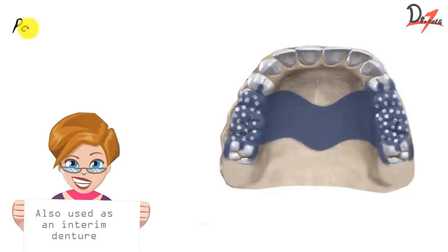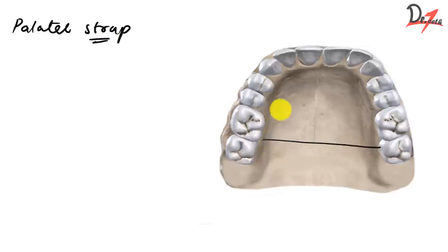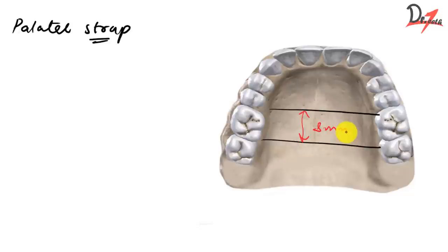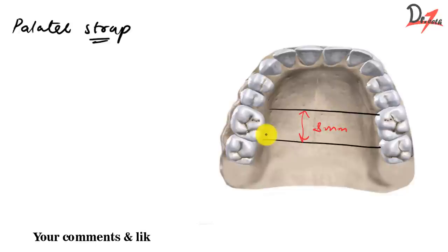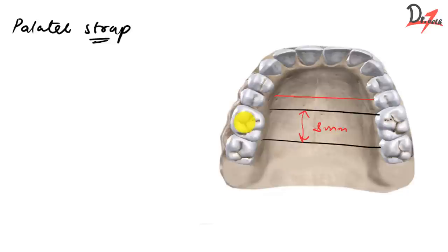The next type is the palatal strap. Instead of a bar, we have a broad strap — minimum 8 mm wide. The palatal strap is not bulky because it covers more palatal area, getting support from there, and the increased surface area provides rigidity, so it can be kept thin. As the number of missing teeth increases, the size of the strap can be increased beyond 8 mm, and if increased enough, it can become a complete palatal connector.